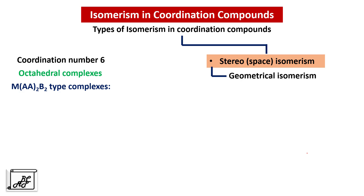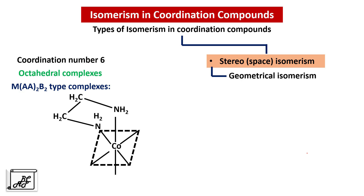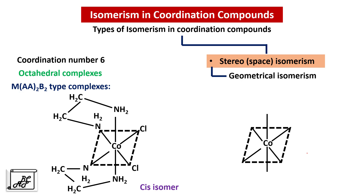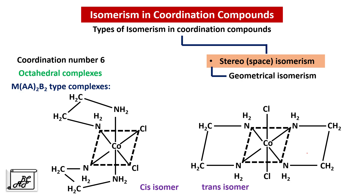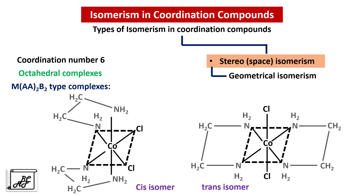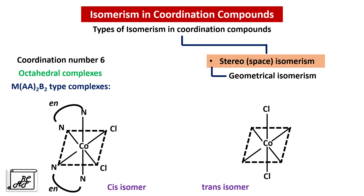Let us move to MAA2B2 type complexes, where AA is a bidentate ligand having similar atoms at both ends. Cobalt is the central atom. Pay attention to the position of the two B-type atoms: when the two chlorine atoms are on the same side, this is the cis isomer; when the two chlorine atoms are on the opposite side, this is the trans isomer. We must remember that MAA2B2 type complexes also show geometrical isomerism and we focus on the position of the two B-type ligands. Here EN stands for ethylenediamine.